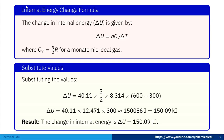The change in internal energy is given by delta U equals N C_V delta T. For a monatomic ideal gas, C_V equals 3/2 R. So delta U equals 40.11 times (3/2) times 8.314 times (T2 minus T1), which equals 40.11 times (3/2) times 8.314 times (600 minus 300). The calculation gives delta U equals 150.09 kJ.